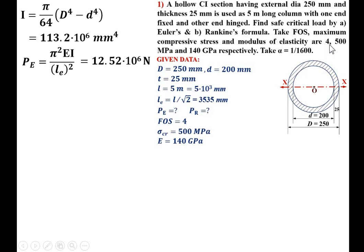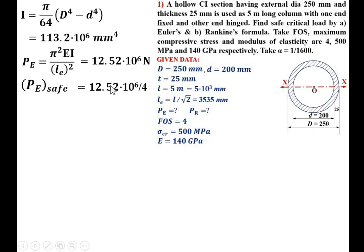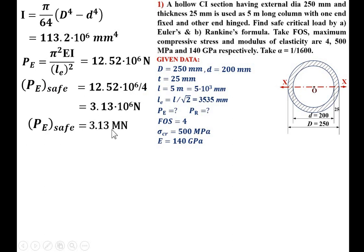The factor of safety is 4. To find the safe load from known dimensions, divide P_E by the factor of safety. Keep in mind: if finding safe load from dimensions, divide by FOS; if finding size from load, multiply by FOS. So the safe Euler load = 12.52 × 10⁶ / 4 = 3.13 × 10⁶ N = 3.13 MN. This is the first answer.